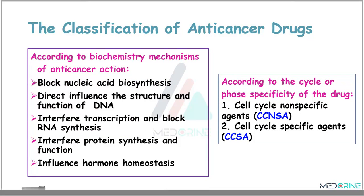The second classification is based on the biochemical mechanism of anticancer action. In this classification, we classify anticancer drugs into: drugs which block nucleic acid biosynthesis; drugs which directly influence the structure and function of the DNA; drugs which interfere with transcription and block RNA synthesis; drugs which interfere with protein synthesis and its function; and lastly, drugs which influence hormone homeostasis.